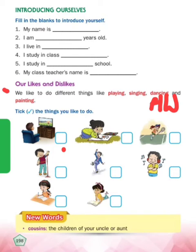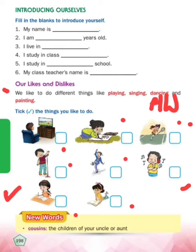You need to tick if you like watching TV. If you like to do painting, aapko ye tick karna hai. If you like to play, you need to tick here. Agar aapko singing karna pasand hai to aapko ye tick karna hai. If you like to listen to music - agar music sunna bohat pasand hai to aapko ye tick karna hai. If you like to do writing or reading - agar aapko reading pasand hai to aapko ye tick karna hai.